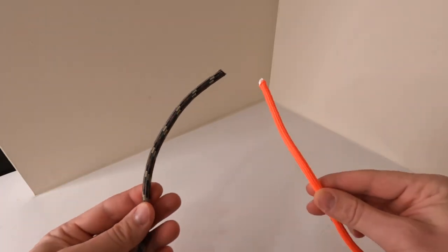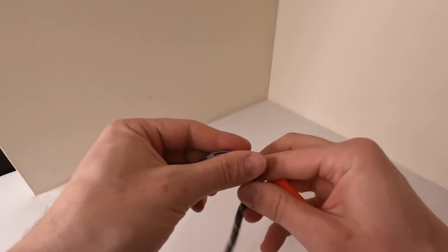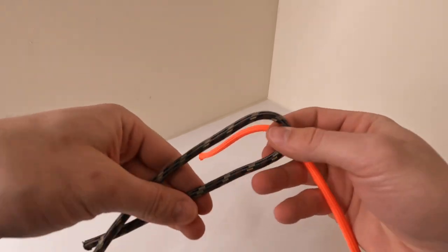Now the sheet bend is a very useful knot especially if you want to tie two different ropes that are different sizes. It is a decently strong knot but it's advised that you only use this knot with non-critical use cases.